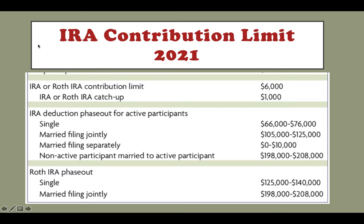In this video I'm going to walk you through quickly about the IRA contribution limit for 2021. You can see here the IRA and the Roth IRA contribution limit is $6,000. So if you are younger than 50 years old, you can make a maximum contribution of $6,000 to an IRA or Roth IRA. If you put $3,000 in an IRA, then you can put another $3,000 in a Roth IRA. If you put $6,000 in the traditional IRA, then you cannot put more money in the Roth IRA. Basically, the total contribution to the IRA and the Roth IRA cannot be more than $6,000.